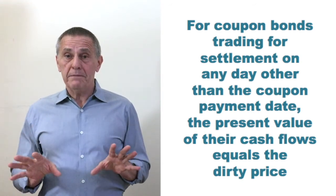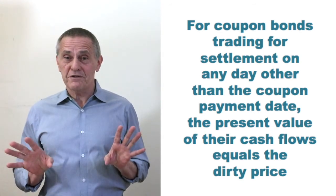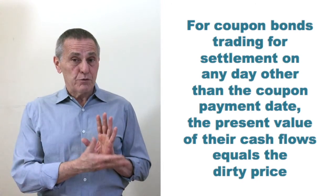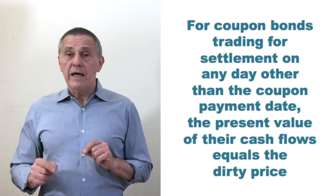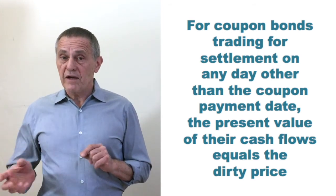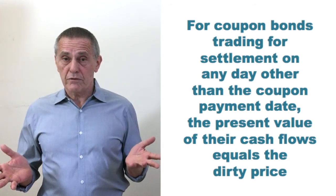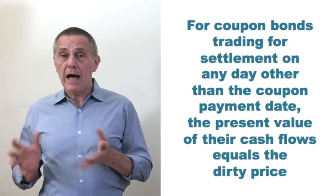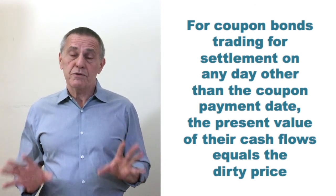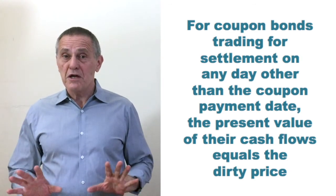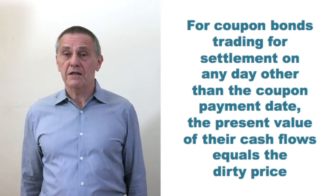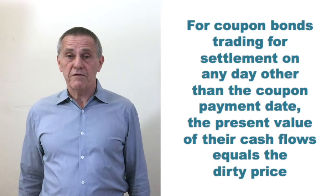And the only way to get the clean price after we've found the present value of all the cash flows, as we just did for that bond when it had two years and ten months to maturity, is go through the industry standard conventions for calculating the accrued interest, backing that out of the present value of all the cash flows, and then the residual is the market price, which is generally what the word price is taken to mean, at least in the vast majority of instances.